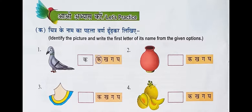The second picture is Gada. What is the first letter of Gada? It is G. So you have to write G in the box.